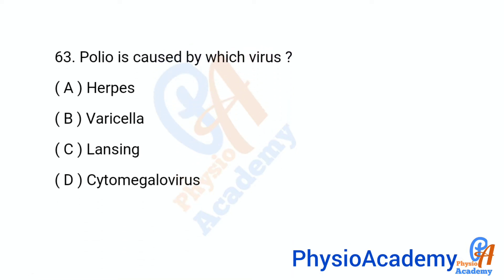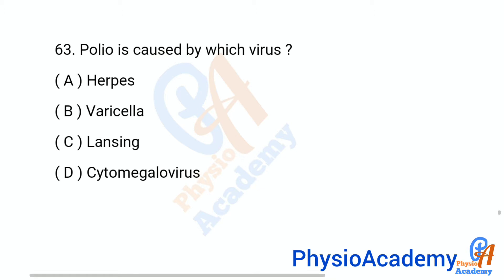Question number 63: Polio is caused by which virus? Option A herpes, option B varicella, option C Lansing, option D cytomegalovirus. The correct answer is option C: Lansing.